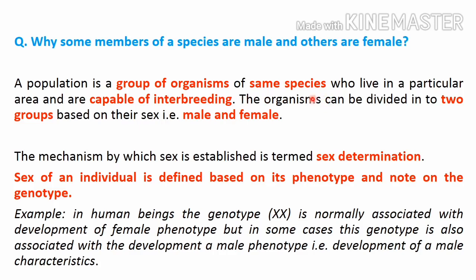If we divide all the organisms of a population or species, we will have broadly two groups: one group constituted by males and the other by females. The mechanism by which sex is established is termed sex determination. The sex of an individual is defined based on its phenotype and not on the genotype.